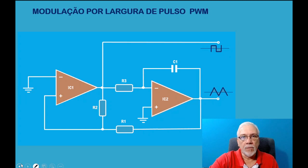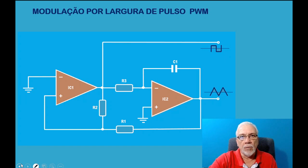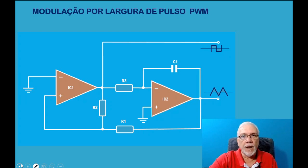Vamos falar sobre modulação de largura de pulsos, ou PWM — Pulse Width Modulation. Isso significa modular a largura do pulso, criando um Duty Cycle. O Duty Cycle é uma relação que vai existir entre o pulso: você tem um estado alto e um estado baixo, e o pulso se divide em dois semiperíodos. A relação entre o tempo de high e o período completo define o percentual de energia transferido para a carga, resultando em uma transferência gradativa de energia.